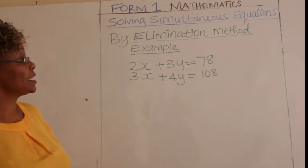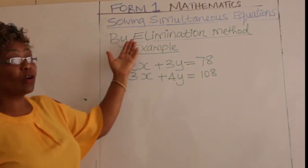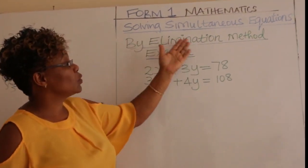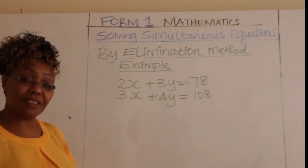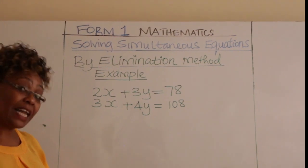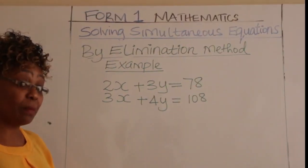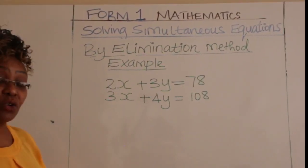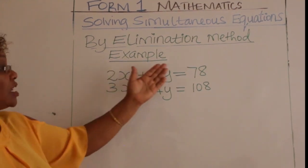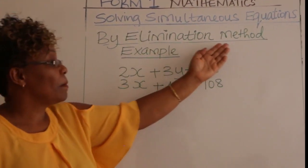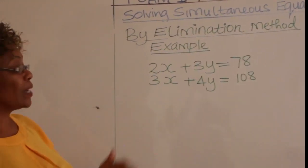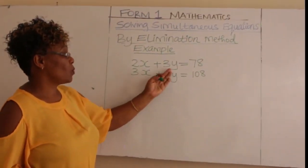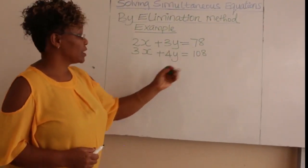We are going to see how we solve simultaneous equations by elimination method. We look at an example here: 2x plus 3y is equal to 78.